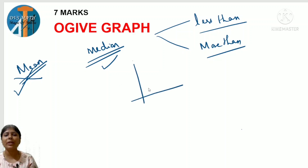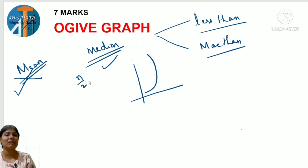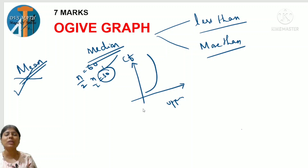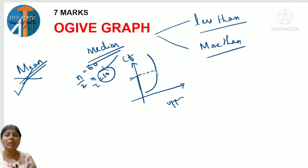To find median graphically, we plot the graph - it may be less than type or more than type. For median we use n by 2. For example, if n equals 60, then n by 2 is 30. On the graph with cumulative frequency, we mark 30 on the y-axis, draw a horizontal line parallel to x-axis until it touches the graph, then draw a vertical line downwards to x-axis where we read the median.